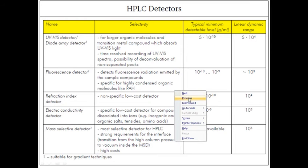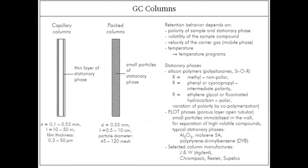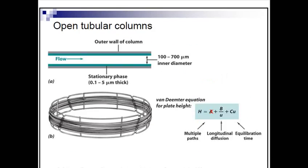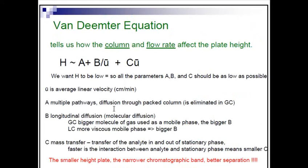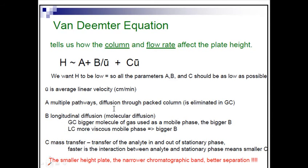Okay, now let's move on to the exact slide where we left off. We have been talking about the Van Deemter equation. The Van Deemter equation tells us how the column and the flow rate affect the plate height. Let's talk about that.